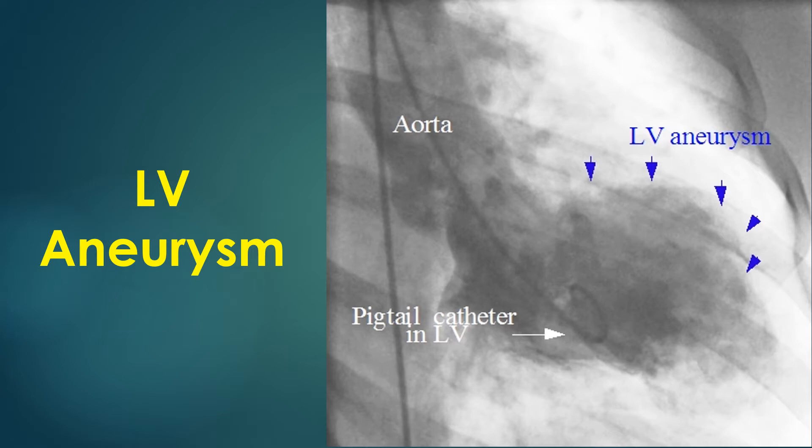A true aneurysm is composed of all three layers of the heart, namely endocardium, myocardium, and pericardium. It has a wide neck and is very unlikely to rupture.